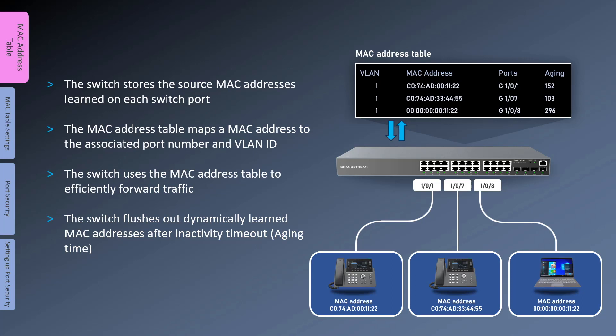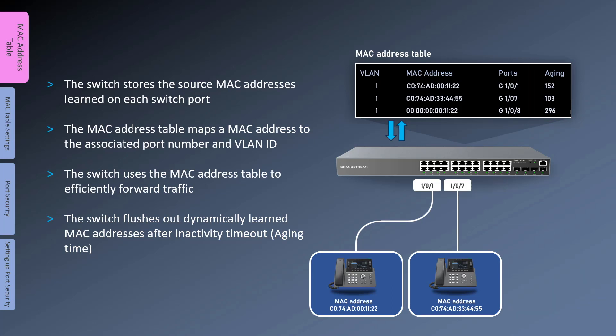For instance, the MAC address table of the following switch contains the learned MAC addresses, the associated port number and VLAN ID. The aging time indicates how long a dynamic MAC address remains in the MAC address table. If there is no traffic activity from a specific MAC address, the switch will automatically flush out the MAC address. By default, the aging time on GWN switches is 300 seconds.